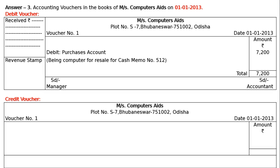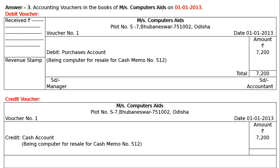We are buying a computer for resale for cash. Hence cash is an asset — it is going out, it is decreasing. Decrease in asset is credited. Here credit cash account rupees 7,200 in the amount column. The narration will be: being computer purchased for resale, for cash memo number 512. And totaling will be 7,200.